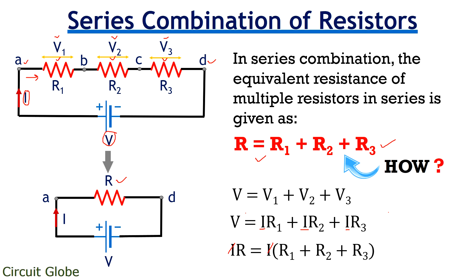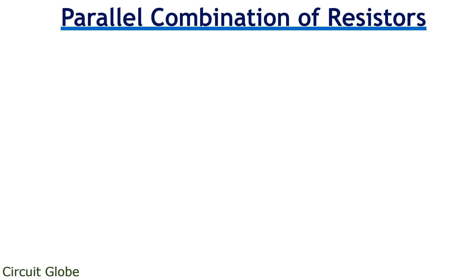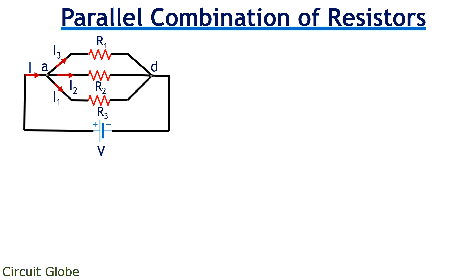Friends, let's now understand parallel combination of resistors. Consider the circuit shown here, comprising of three resistors R1, R2, and R3 connected in parallel, across which a voltage of V volts is supplied. We know in parallel combination, same potential exists between different branches, but the current that is flowing through each branch is different. Therefore, the total current I gets divided into I1, I2, and I3 for this particular circuit.